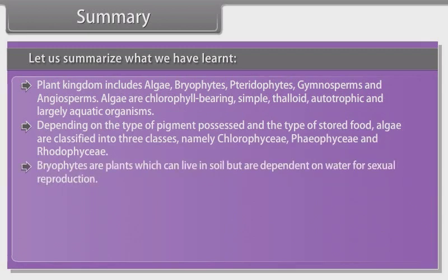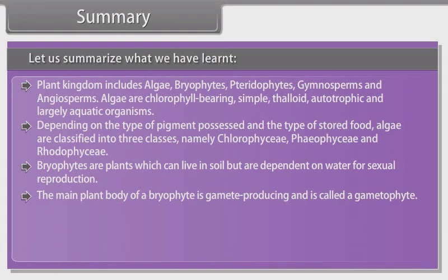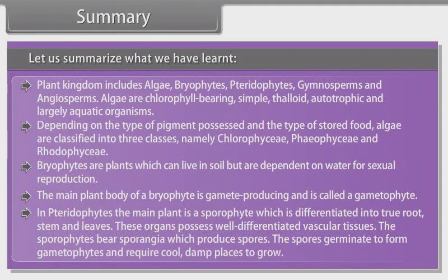Bryophytes are plants which can live in soil but are dependent on water for sexual reproduction. The main plant body of a bryophyte is gamete producing and is called gametophyte. In pteridophytes, the main plant is sporophyte which is differentiated into true root, stem and leaves. These organs possess well differentiated vascular tissues. The sporophytes bear sporangia which produce spores. The spores germinate to form gametophytes and require cool, damp places to grow.